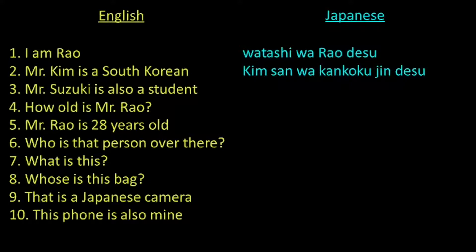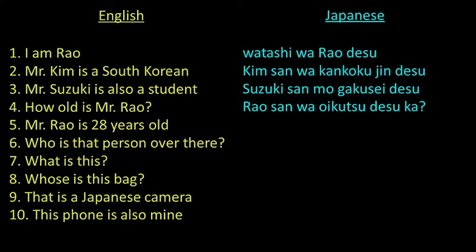Let us go to the next one. Student is Gakse and also is Mo, so the translation will be: Suzuki san mo Gakse desu. Let us go to the next one. When asking someone's age, the interrogative Nansai is used. If you want to be more polite, you should use the word Oikutsu. So the translation will be: Rao san wa Oikutsu desu ka?